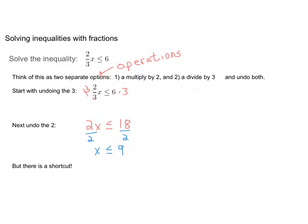All right, so you can think of this kind of problem where you have a number not equal to 1 in the numerator and the denominator as two different operations. And you're going to undo each one individually to get your answer. So we undid the 3 by multiplying, we undid the 2 by dividing, and we got our answer. So there's actually a couple of shortcuts. So let's take a look at one of them. I'm going to write the problem again. 2 thirds x less than or equal to 6.